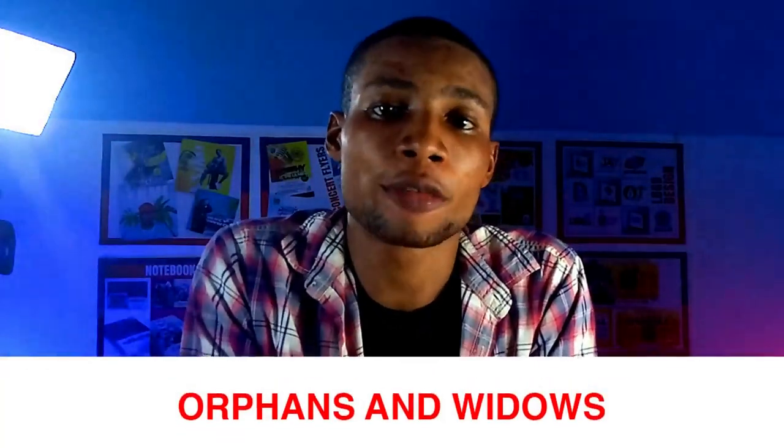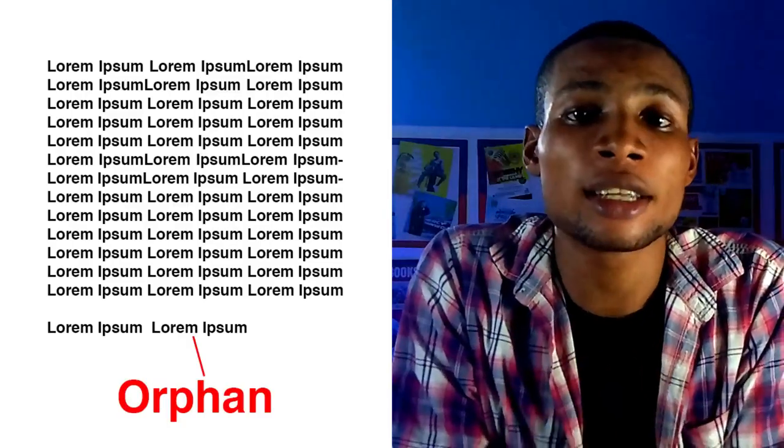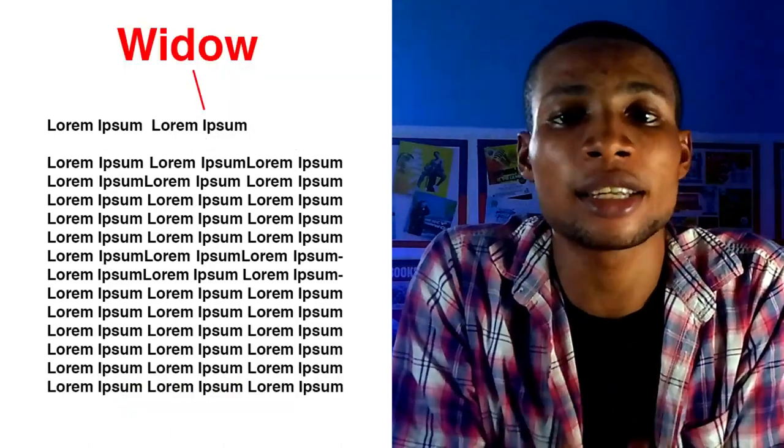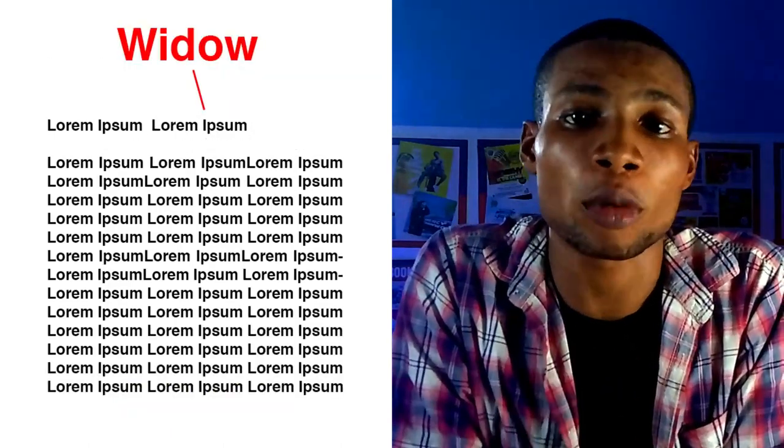What do orphans and rivers refer to in graphic design terms? These mistakes normally happen in your body copy and lots of people tend to miss them when proofreading your artwork. We normally focus more on headings and miss these small mistakes. An orphan is a single line of text at the bottom of a page. A widow is a single line of text at the top of a page, separating it from its paragraph. Don't separate single lines of text from their paragraph.